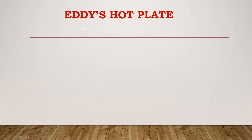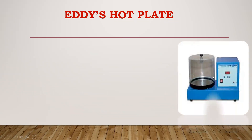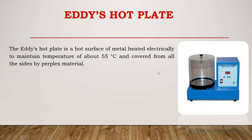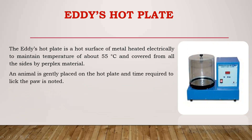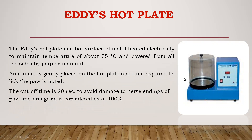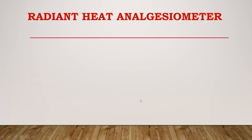Looking at Eddy's hot plate apparatus: it is a simple instrument where the hot plate or metal surface is heated electrically. The plate is covered with plexiglass and a temperature controller is provided. The plate is heated and the temperature is maintained at 55 degrees centigrade. Animals are gently placed on the hot plate and the time required for jumping or licking of the paw is noted, which gives the analgesic activity. The cutoff time for this experiment is 20 seconds to avoid damage to the nerve endings of the paw.